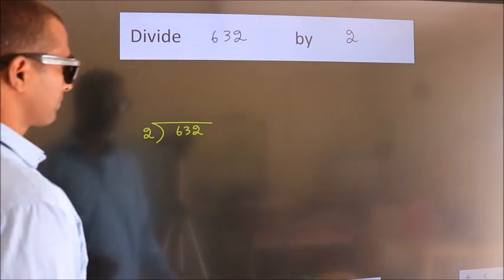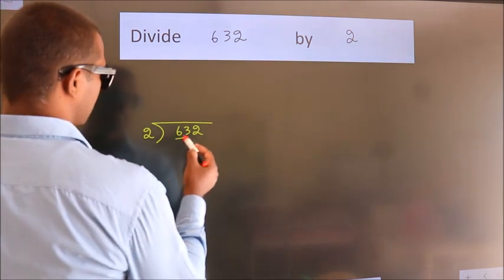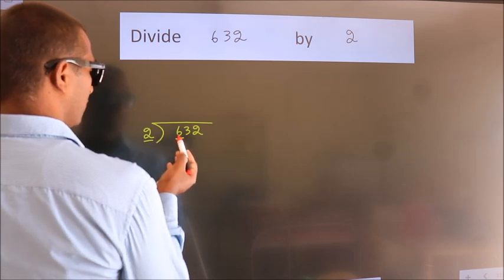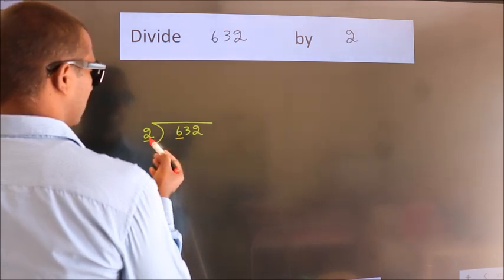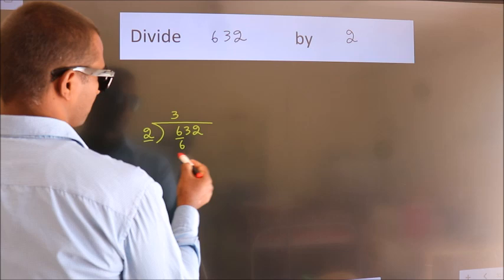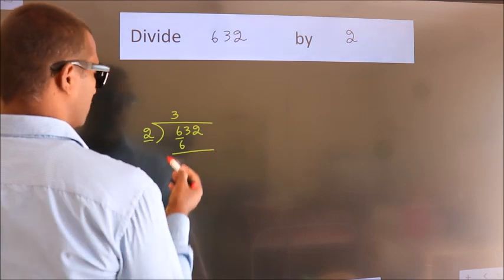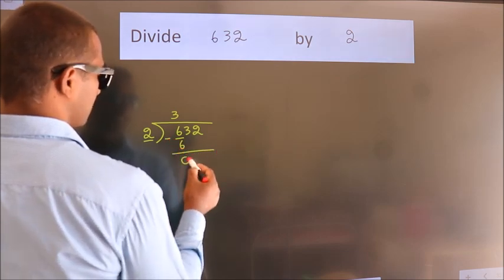Next, here we have 6, here 2. When do we get 6? In 2 table, 2 times 3 is 6. Now, we should subtract. We get 0.